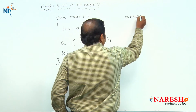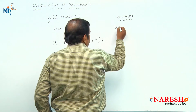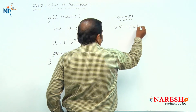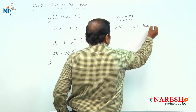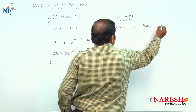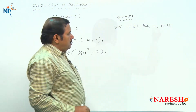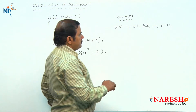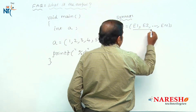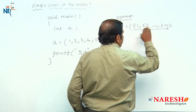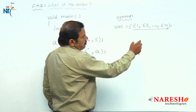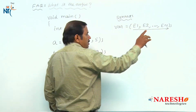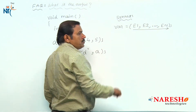The syntax to use a comma operator is: variable = expression1, expression2, ... expressionN. The procedure of executing the comma operator is: all the expressions separated by commas are evaluated left to right. The rightmost expression value is the final result, and that expression value is assigned to the variable.